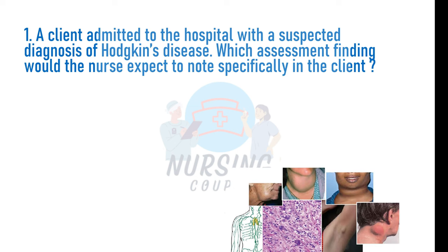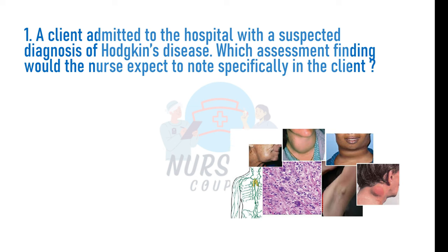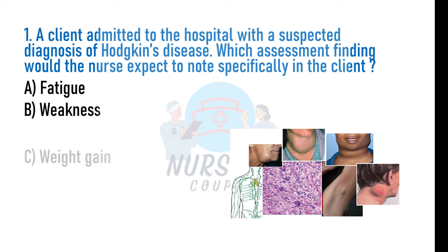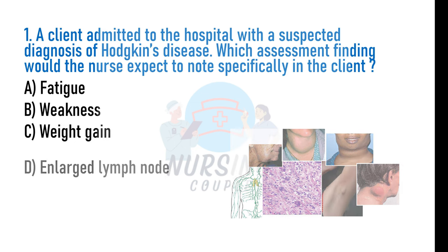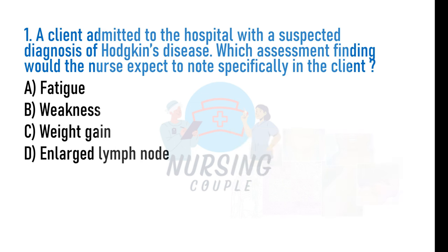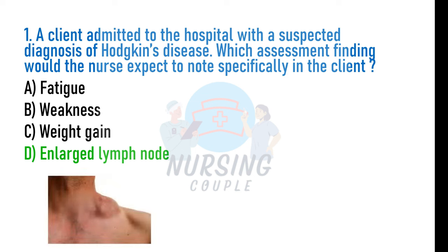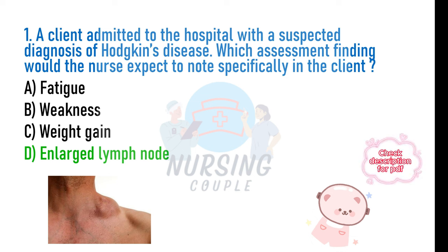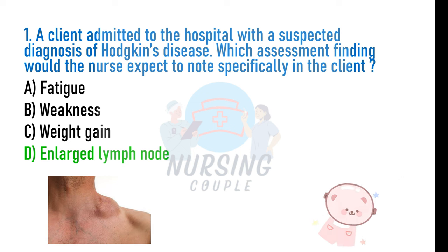A client is admitted to the hospital with a suspected diagnosis of Hodgkin's disease. Which assessment finding would the nurse expect to find specifically in the client? A. Fatigue, B. Weakness, C. Weight gain, D. Enlarged lymph nodes. The answer is Option D: Enlarged lymph nodes. Hodgkin's disease is a chronic progressive neoplastic disorder of lymphoid tissue characterized by painless enlargement of lymph nodes, with progression to extra-lymphatic sites such as the spleen and the liver.